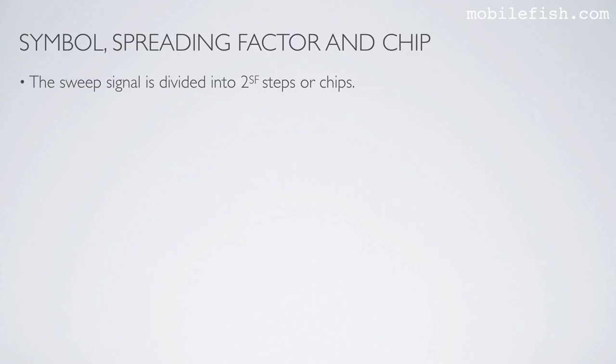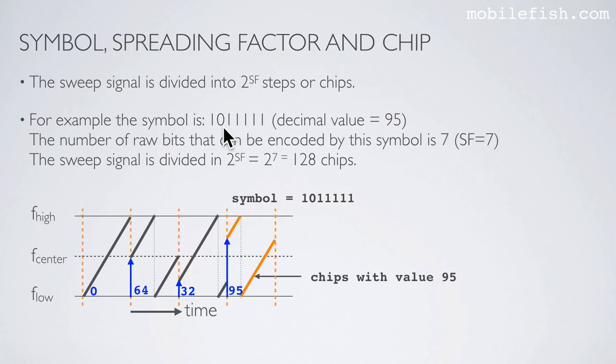The sweep signal is divided into 2 to the power SF steps or chips. For example, the symbol is 1011111, representing decimal value 95. The number of raw bits that can be encoded by the symbol is 7, meaning spreading factor is 7. The sweep signal is divided into 2 to the power SF equals 2 to the power 7 in this particular example equals 128 chips.